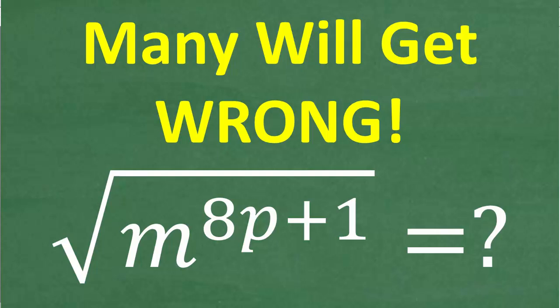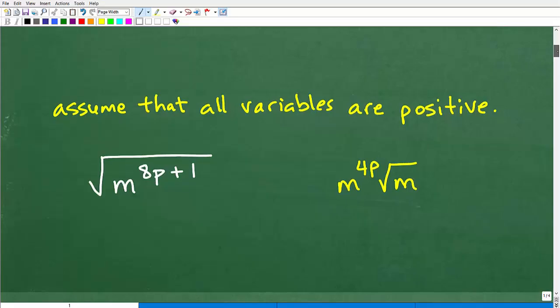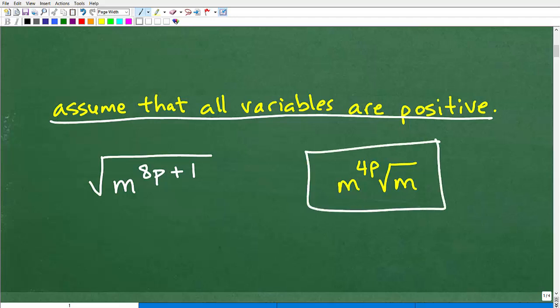Let me go ahead and show you the answer. What we're going to do here, just to clarify this problem, is assume that all variables are positive. So we have m to the 8p plus 1, and we're going to assume that p here is going to be a positive value. With that assumption made, here is the answer: m to the 4p times the square root of m. This is the answer.